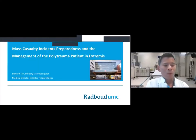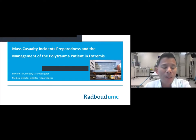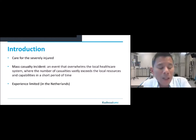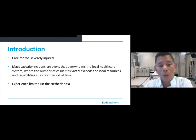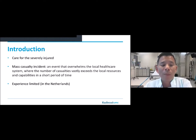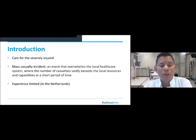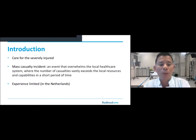I'm going to talk about mass casualty incidence preparedness and the management of the polytrauma patient in extremis. We can all handle one patient who comes in shot or involved in a blast, but it's different when two or four patients show up at the same time — that's when you may have encountered a mass casualty. A mass casualty incident is an event that overwhelms your local health care system where the number of casualties exceeds your local resources, and it depends very much on where and when you work.